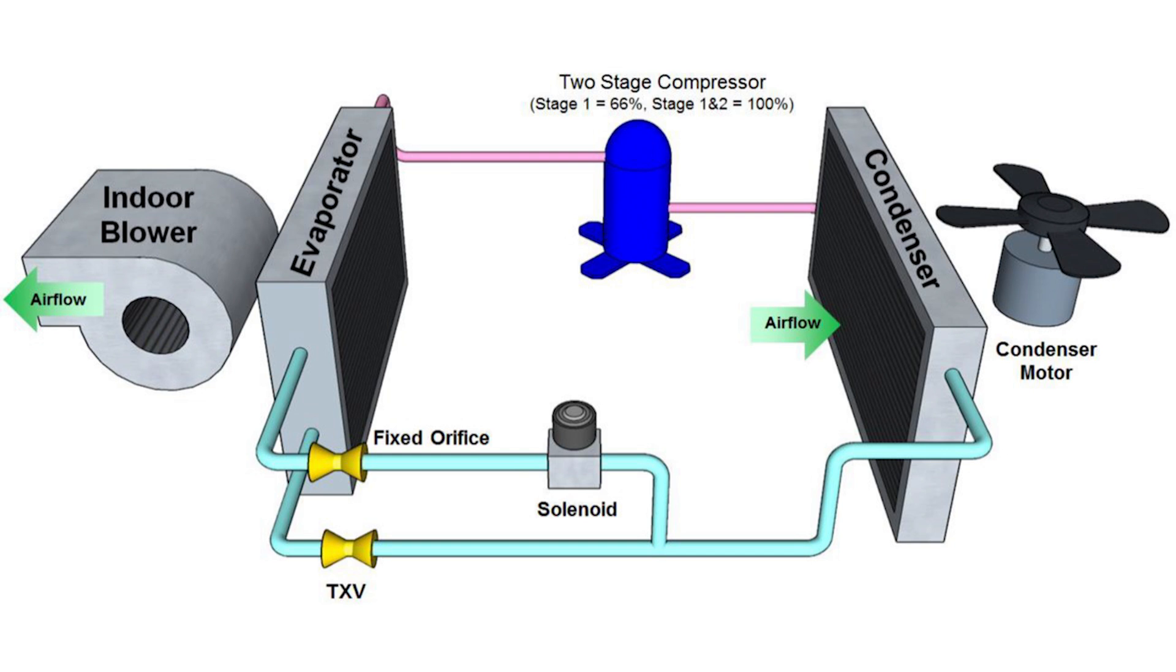When it comes into the evaporator coil, we're going to actually have that split. So stage one will go to the TXV, which will modulate just like it normally would, and that will go to the evaporator. But then stage two of the compressor will open up a solenoid valve, which will allow refrigerant to flow into the rest of the evaporator as well.